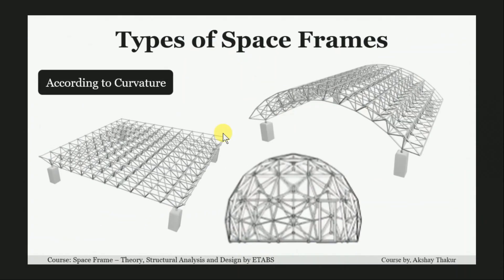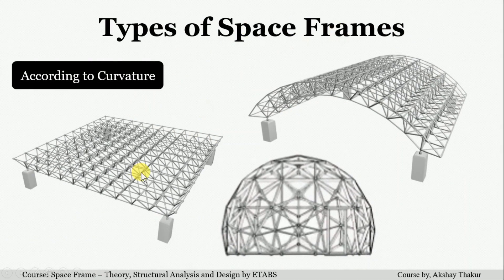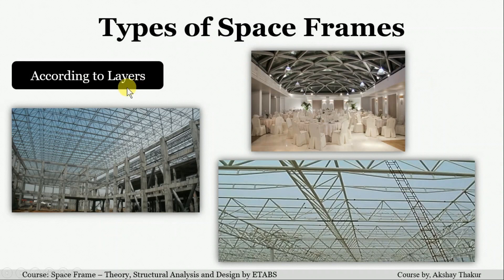According to curvature, flat roofs are generally used, barrel vaults are mostly used at terminal stations, and spherical domes are used for special purposes. According to the number of grid layers, single layer grids are mostly used for architectural purposes, whereas double layer and triple layer grids are used for covering large spans.